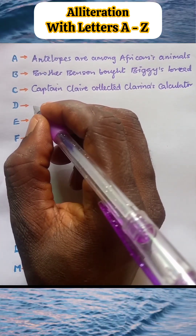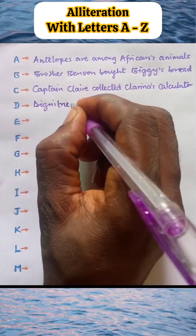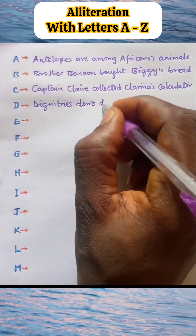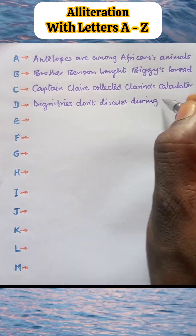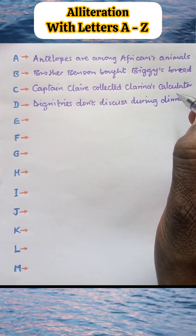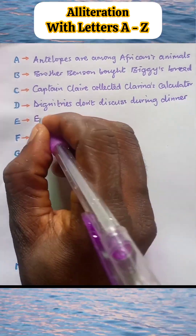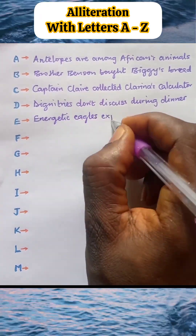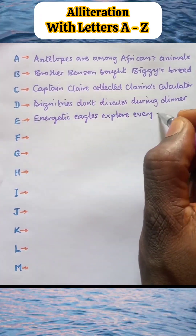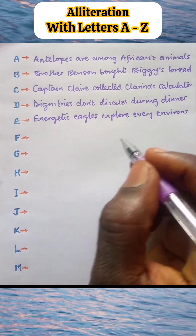Alliteration D: Dignitaries don't discuss during dinner. Alliteration E: Energetic egos explore every environs.